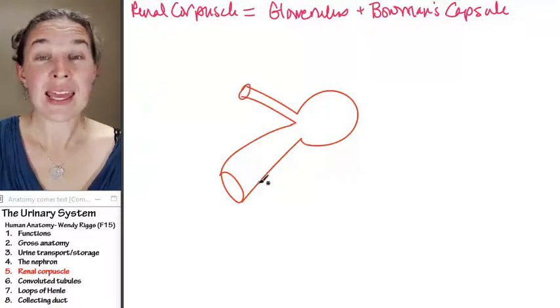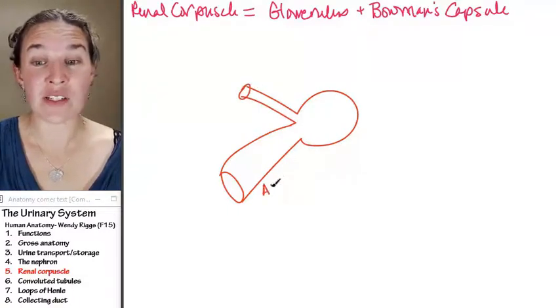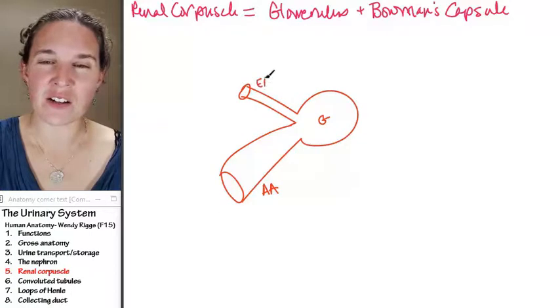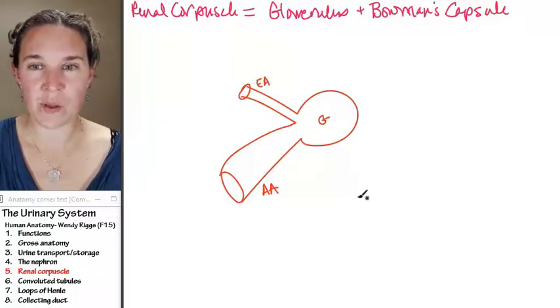It came in through the afferent arteriole. And this is glomerulus and it left via the efferent arteriole. So you're good with that?